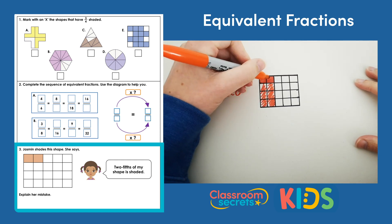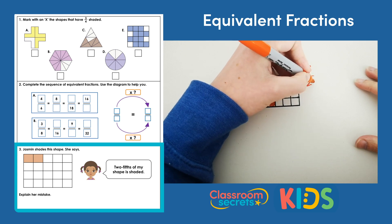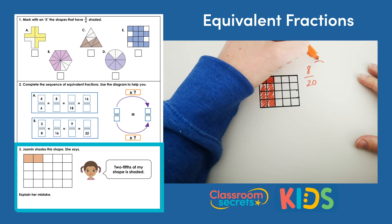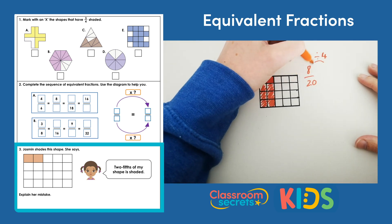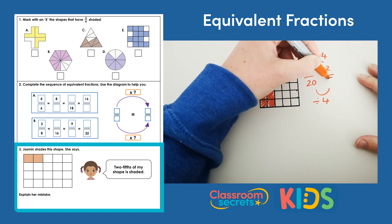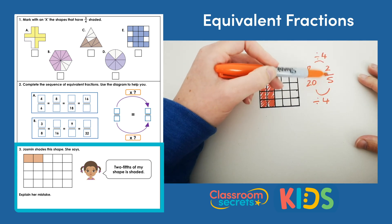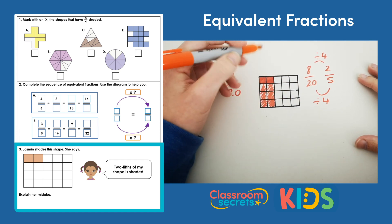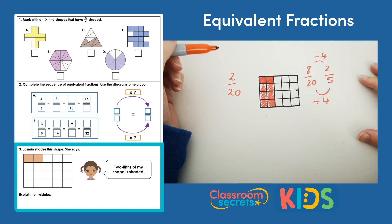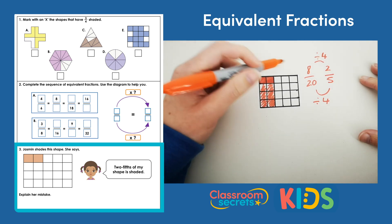Because now what Jasmine has is 2, 4, 6, 8 twentieths. If we find an equivalent fraction to 8 twentieths by dividing by 4, 8 divided by 4 gives us 2. So 8 twentieths is 2 fifths. We can also see this by looking at the shape. So if we look at the two columns, there are two columns shaded out of five columns, which is equivalent to 2 fifths. So Jasmine hasn't shaded enough of her shape. She needs to shade two full columns or 8 twentieths as 8 twentieths is equivalent to 2 fifths.